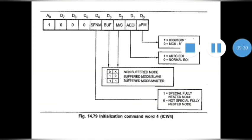The next two bits, D2 and D3, are used to specify the buffer mode. If these two bits are set to 00 with don't care (X), the processor is working in non-buffer mode. If set to 10, it is buffer mode for slave; if set to 11, it is buffer mode for master. Bit D4 is used for selecting the mode: if set to 1, it uses special fully nested mode; if set to 0, special fully nested mode is not used.